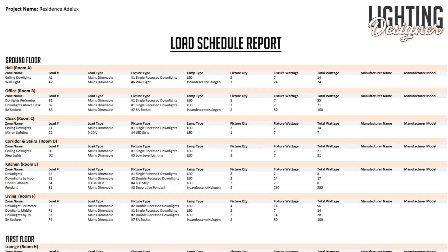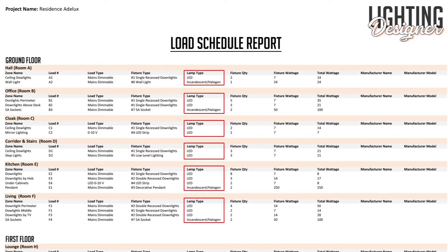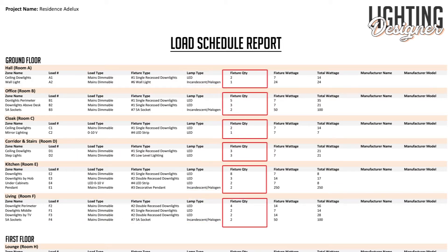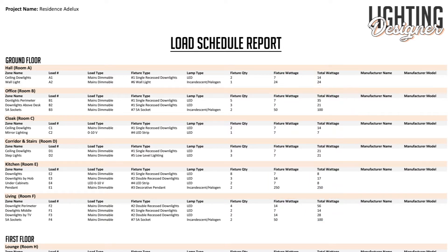There are different ways a load schedule can look. Here in our example, we have the zone name, the load number, the load type, the fixture type, the lamp type, the fixture quantity, fixture wattage and total wattage for each circuit, the manufacturer name and model — and you can even have information on the light color or cutout dimensions if the fitting needs to be recessed. All of this is very useful.